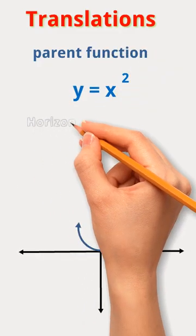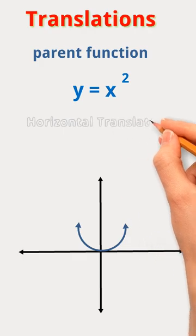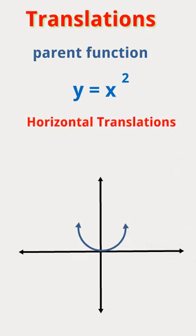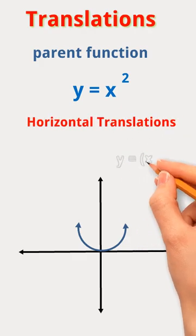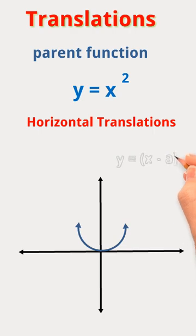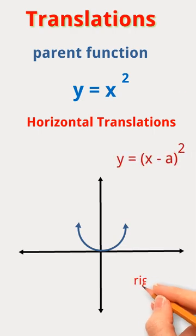Horizontal Translations: When the equation is given by y equals (x minus a) squared, there will be a shift in the parent graph towards the right by a units.